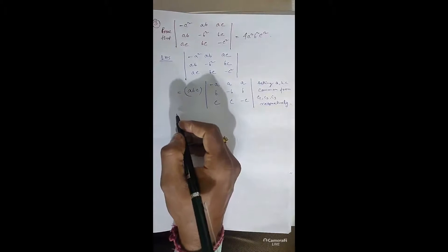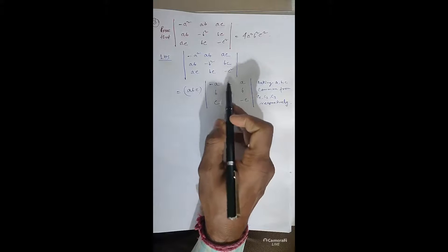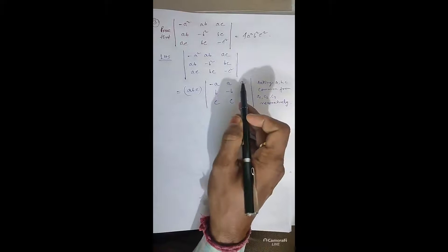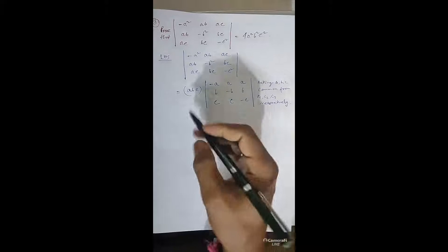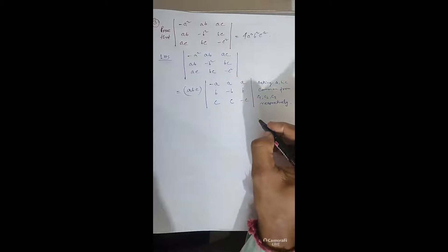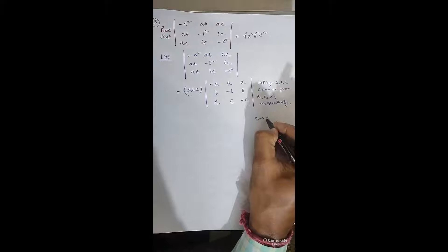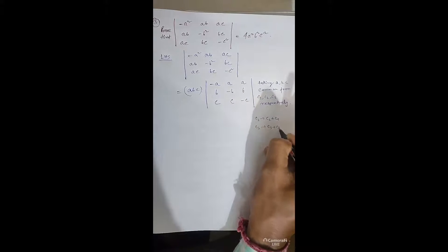Next, apply C2 plus C1 and C3 plus C1. This makes elements in C2 and C3 become zero in specific rows. C2 becomes (0, 0, 2C) wait — applying C2+C1 and C3+C1: C2 becomes (0, 0, 2C) and C3 becomes (0, 2B, 0).